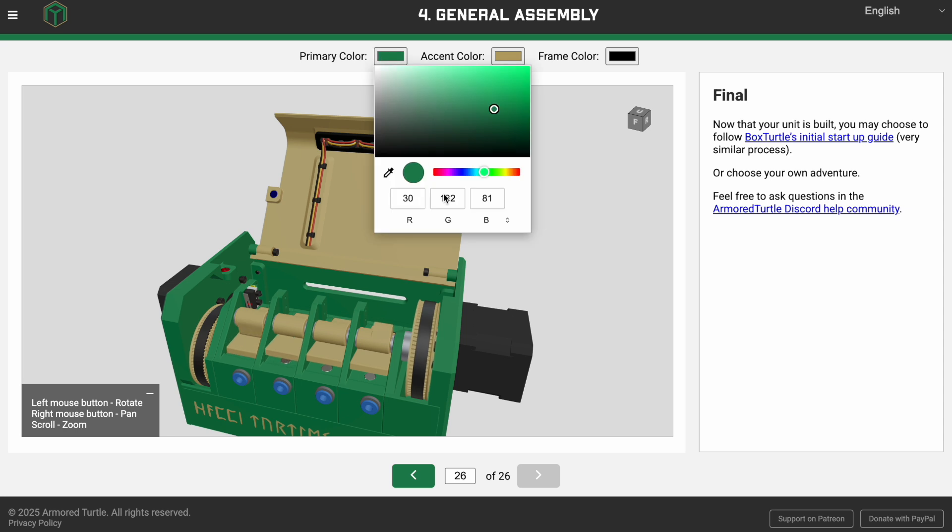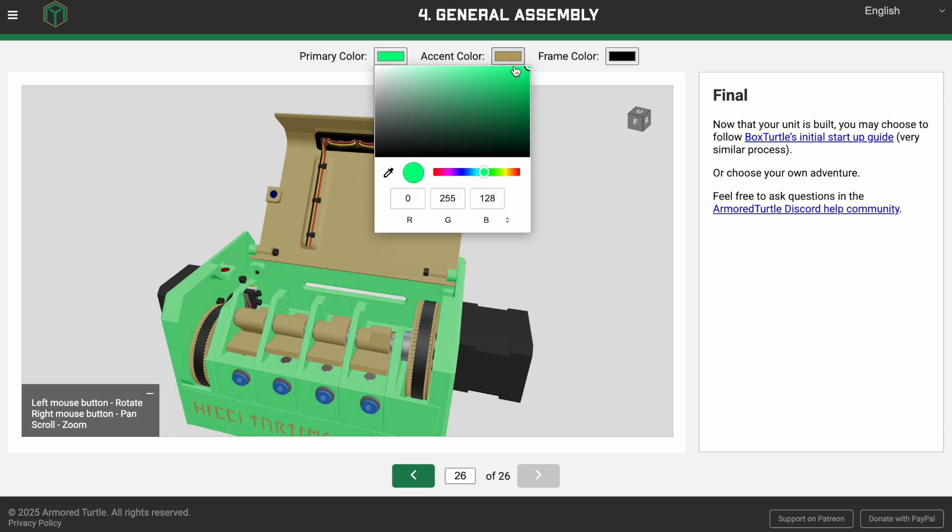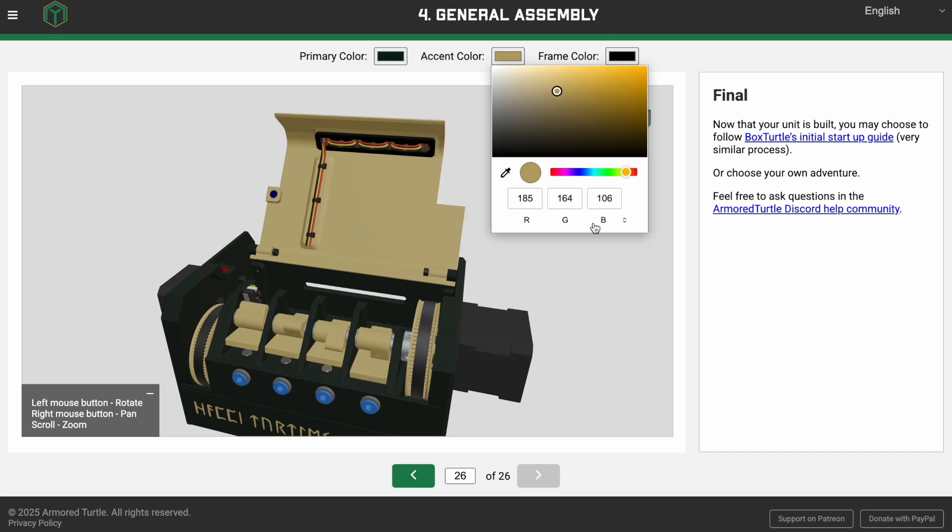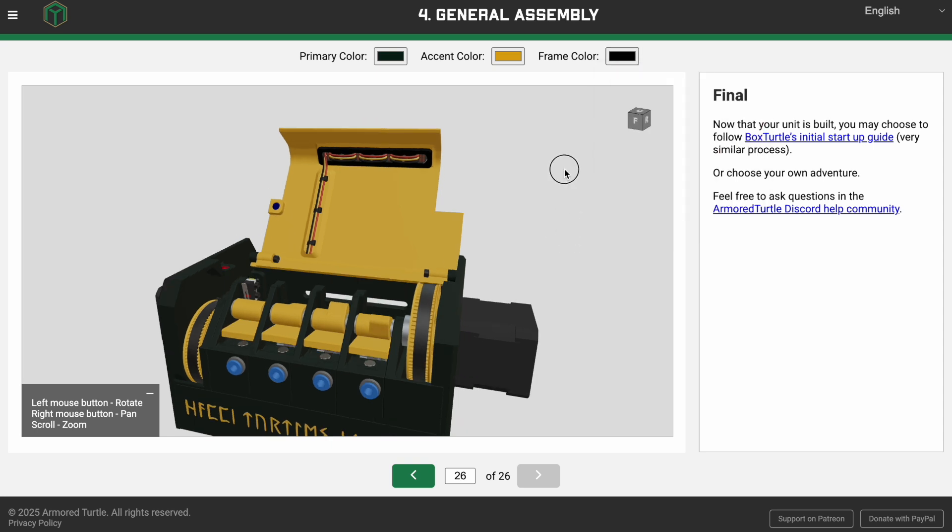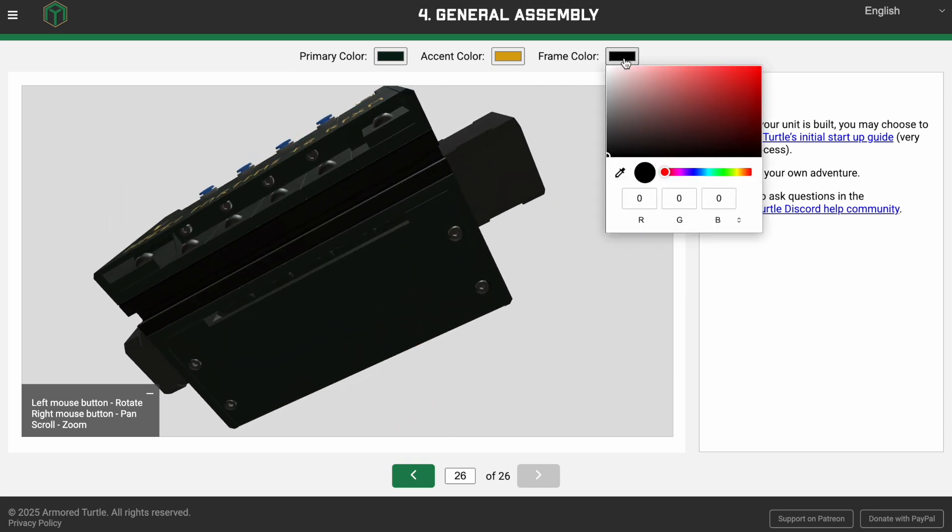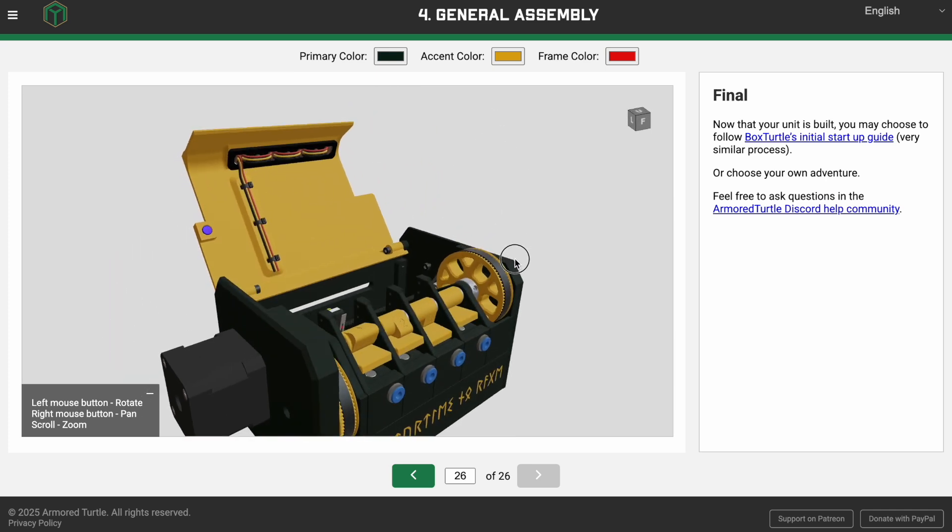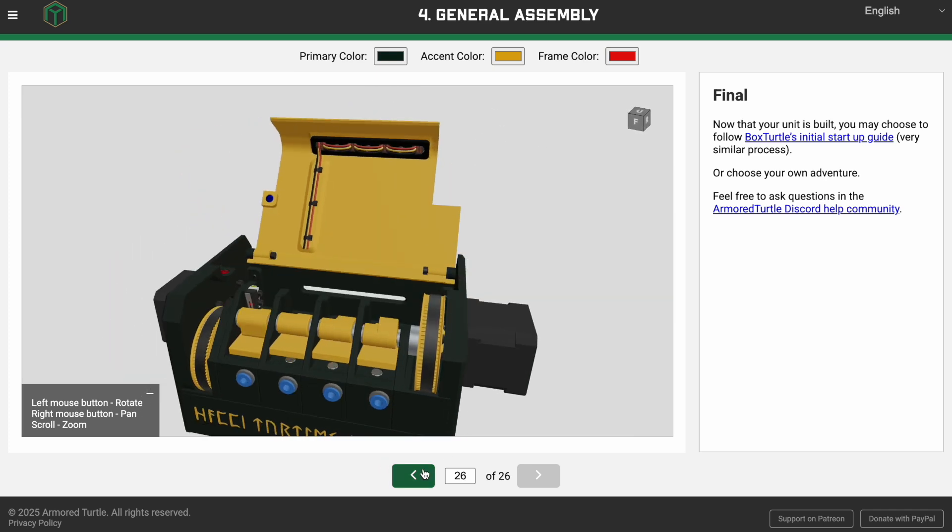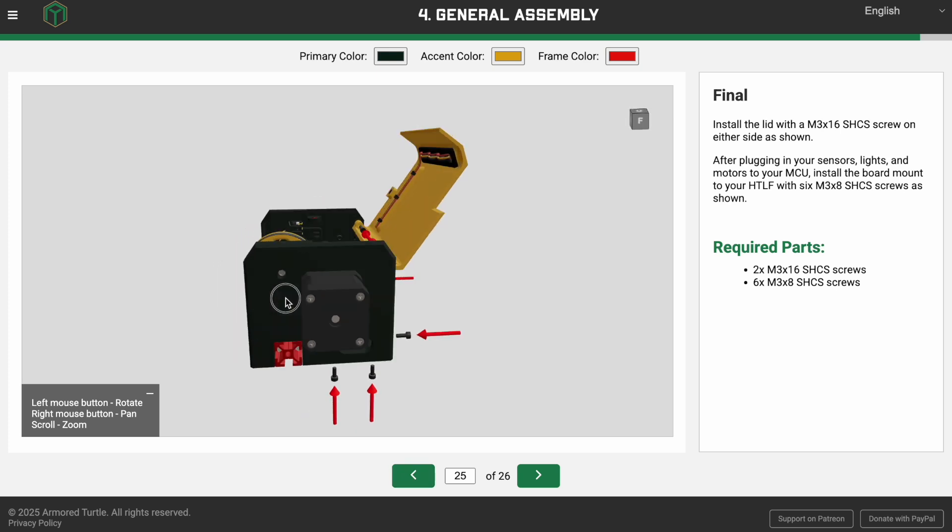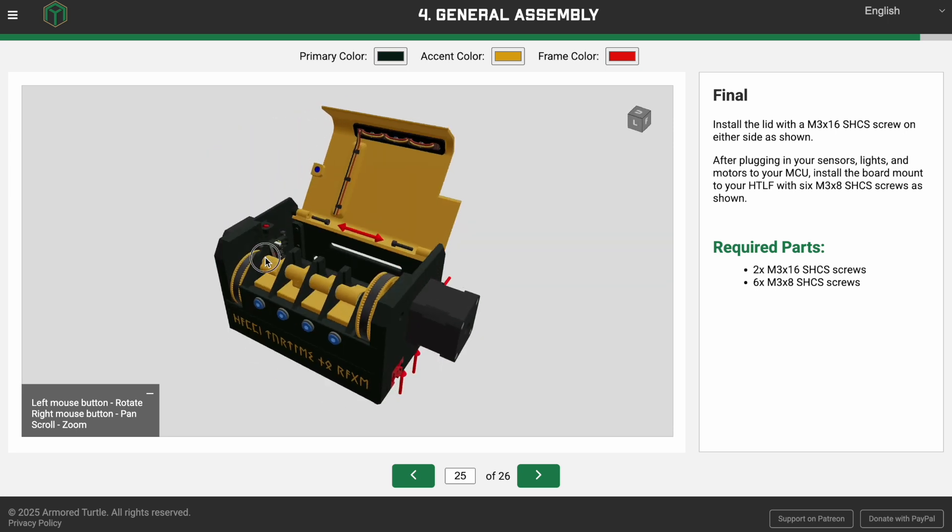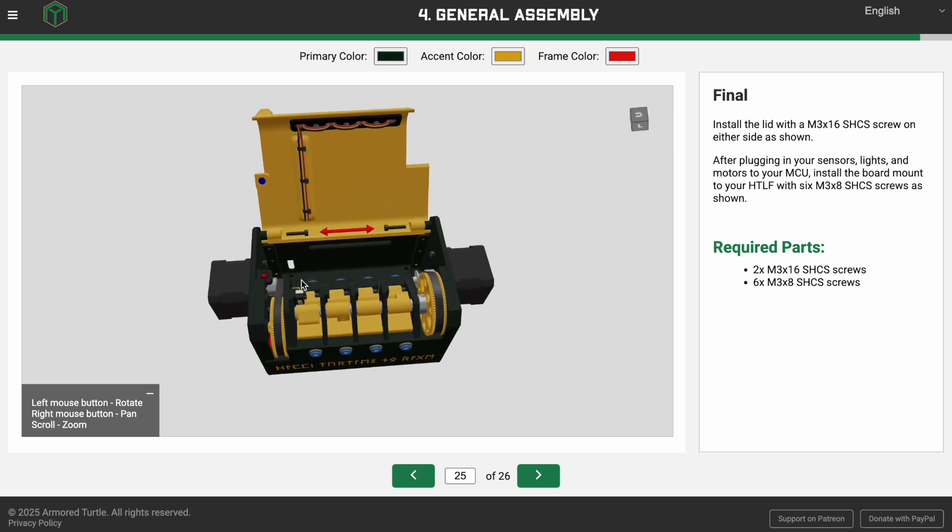You can use it as a color picker to plan what you're going to do your printed parts in. Black and gold—we can change primary, accent, and frame color. So if we look at the extrusion there, make it red. And of course, just a clean, effective step-by-step instructional on how to assemble any of the Armored Turtle projects.